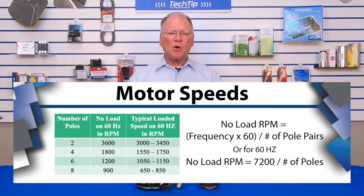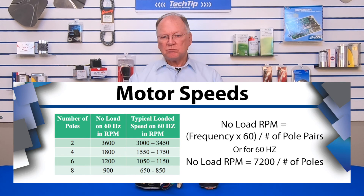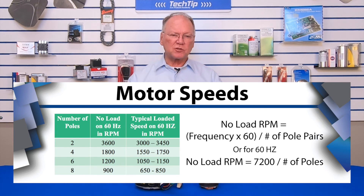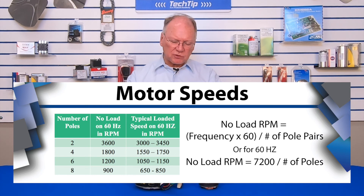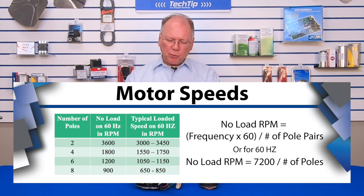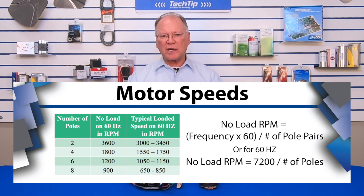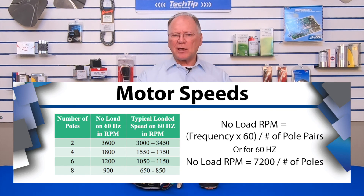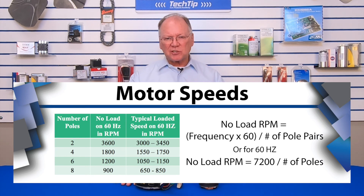Comparing that to this table, the far-right column shows the typical speed a motor achieves when it has a load on it. A four-pole motor could operate at 1725 RPM or 1650 RPM — somewhere in that range. A six-pole motor is where our 1075 RPM motors are, so this particular motor is a six-pole motor. If it were an eight-pole motor, the nameplate would probably show 825 RPM.